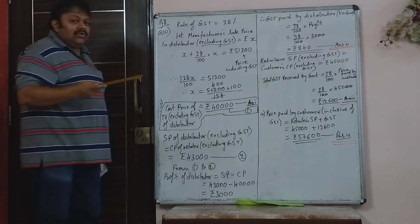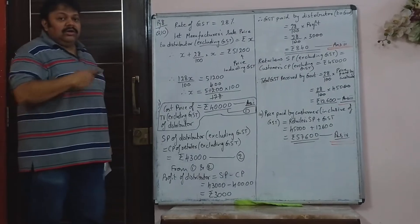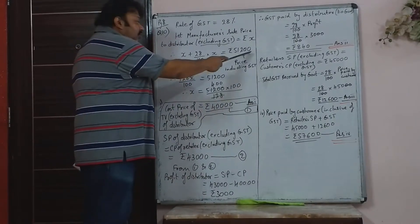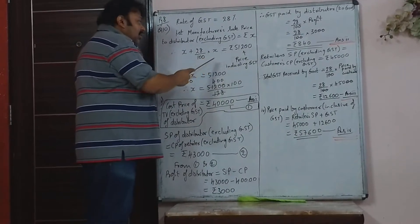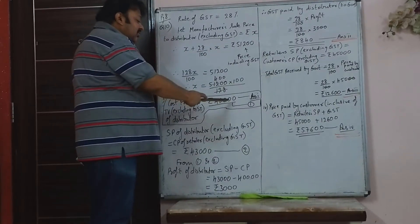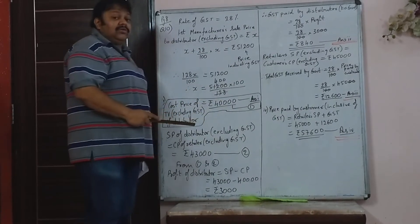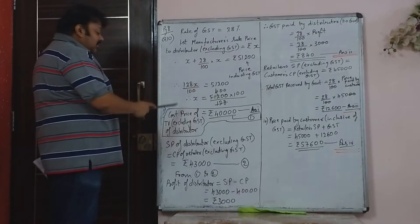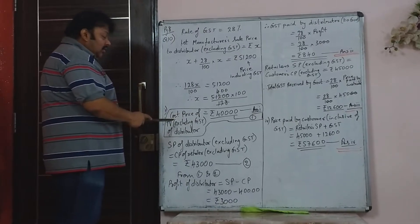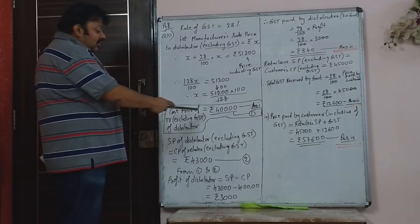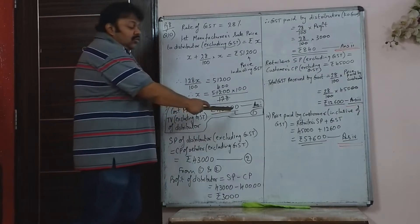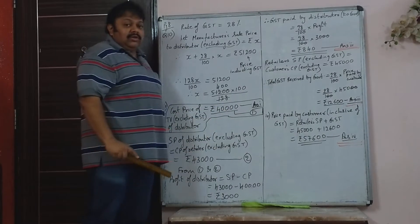They have not given the price without GST — they gave you the price with GST. So first you have to find X, that is, what is the price without GST. The manufacturer's sale price, or the distributor's cost price excluding GST, is Rs. 40,000.